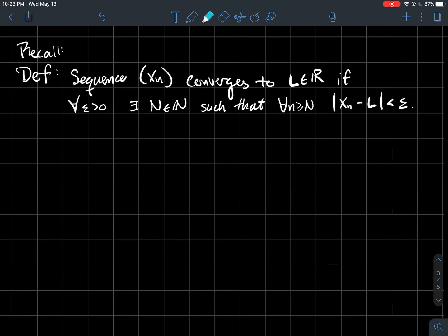...the distance between every term and that number L should be smaller than epsilon. So eventually, all the points in your sequence are within epsilon of L. And if no such number L exists, we say the sequence x_n diverges.